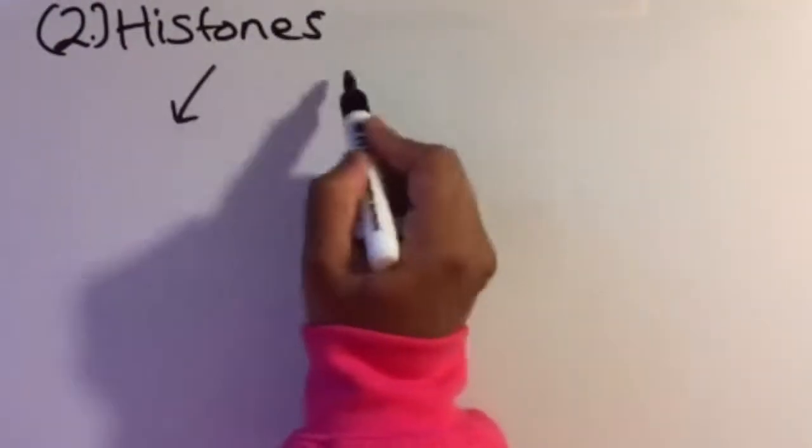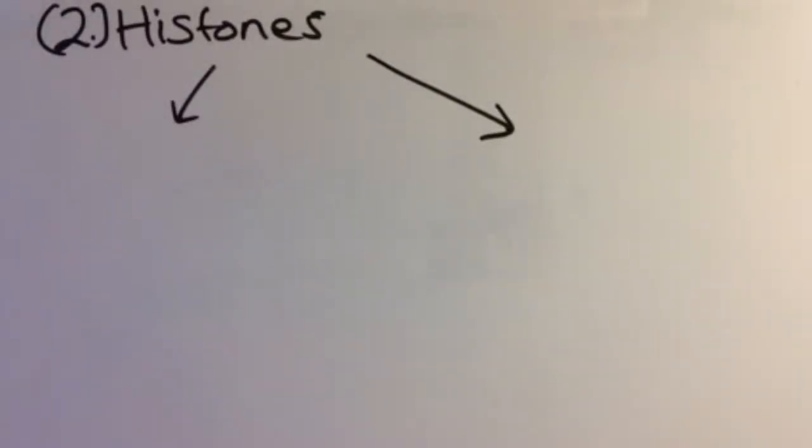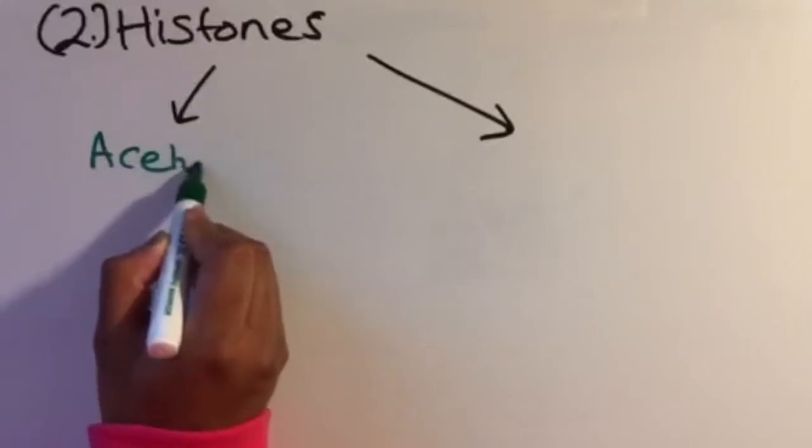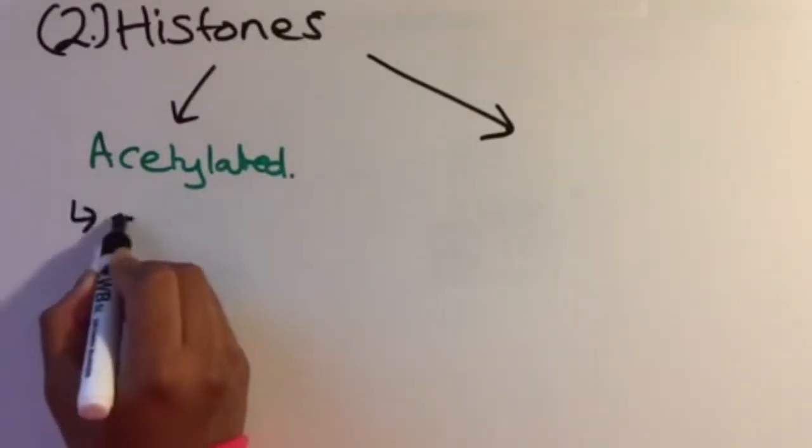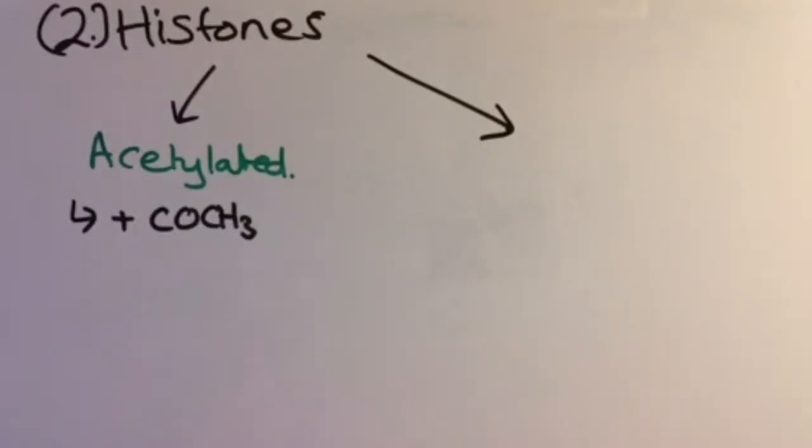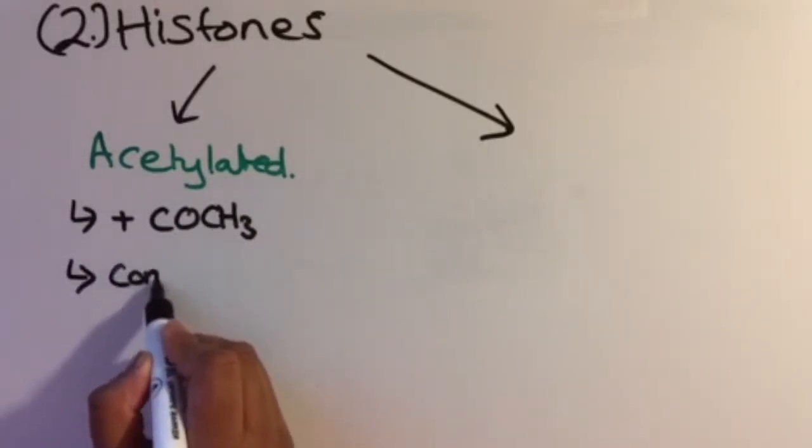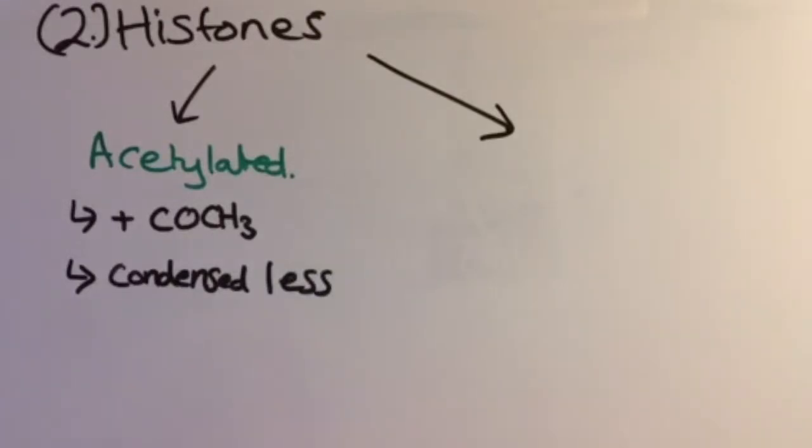Now let's talk about histones. When we talk about histones, we talk about acetylation. You can either have acetylation or deacetylation. Firstly, acetylation: acetylation is the addition of an acetyl group, which is COCH3.